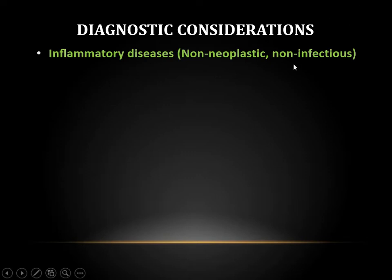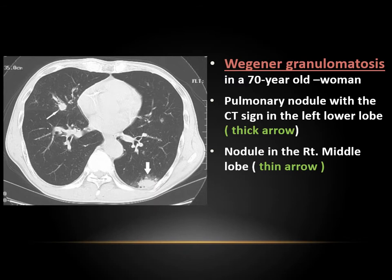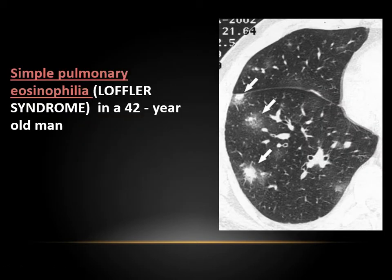Now let's go to the inflammatory type. One of the causes is granulomatosis with polyangiitis, known as Wegener's. We know that the cavitary region is the most common type, but sometimes it can present with the halo sign. Sometimes it is seen in eosinophilic disease, endometriosis, organizing pneumonia, and hypersensitivity pneumonitis in patients dealing with birds, sometimes presenting with diffuse nodules. Also iatrogenic lung disease or pulmonary arteriovenous aneurysm. This is a case of Wegener's — one of the nodules shows a CT halo sign. This is a case of simple pulmonary eosinophilia with multiple nodules with halo sign.